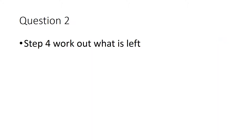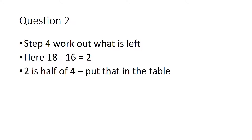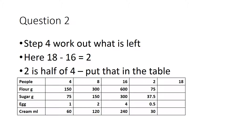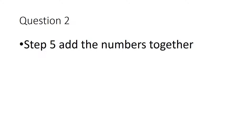Now we work out what's left. We just need to get from 16 to 18. You can see in the table you've got a 4 — and half of 4 is 2. What you do to one side of the ratio you do to the other, so put your 2 in and halve the other values as well. Then just add together your 16 row and your 2 row, and that gives you what's required for 18 people.